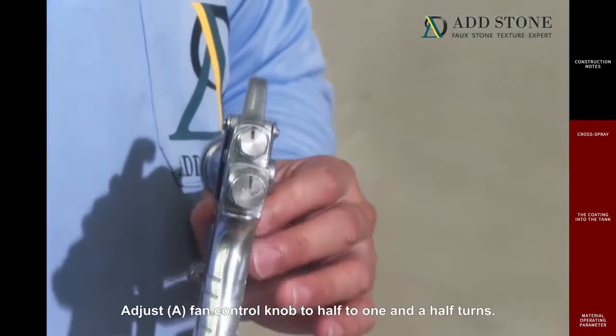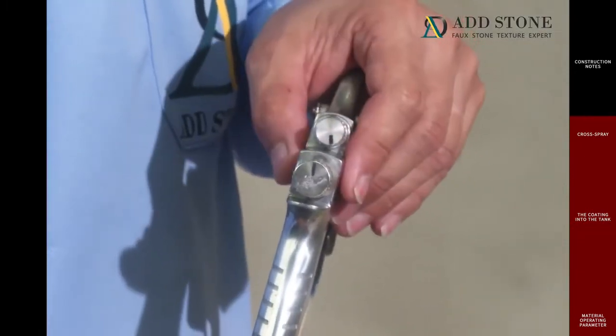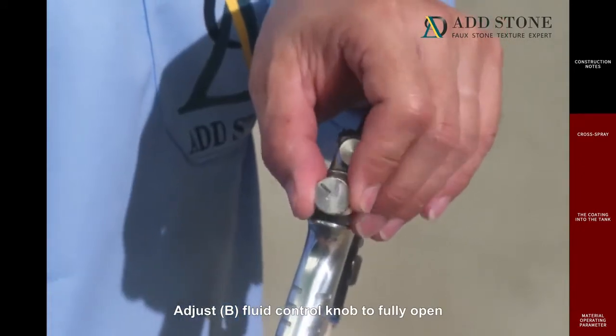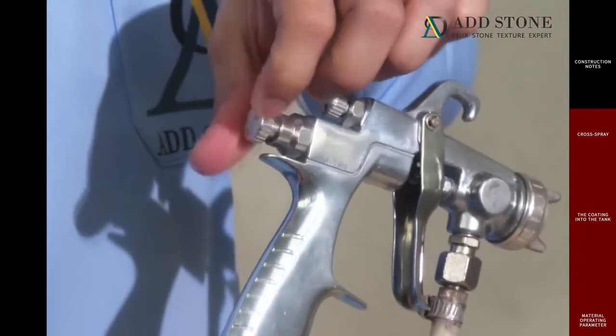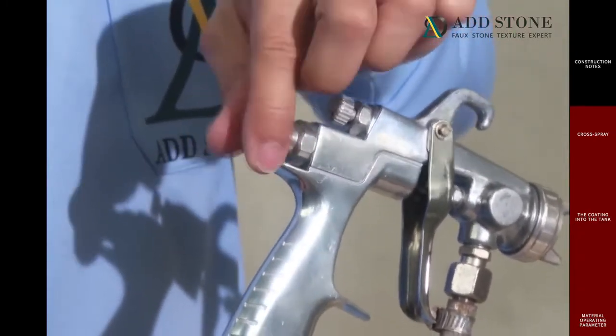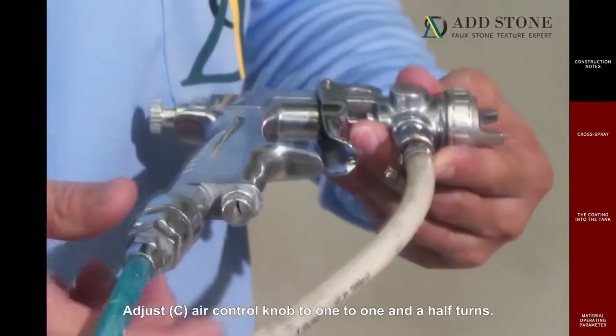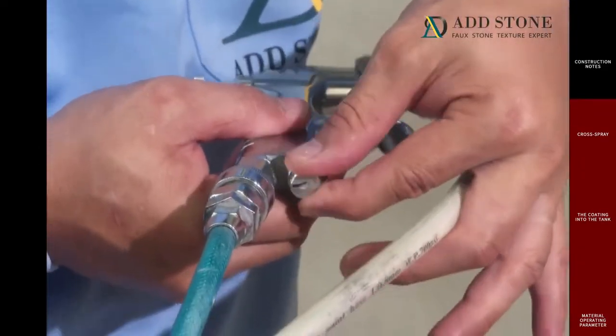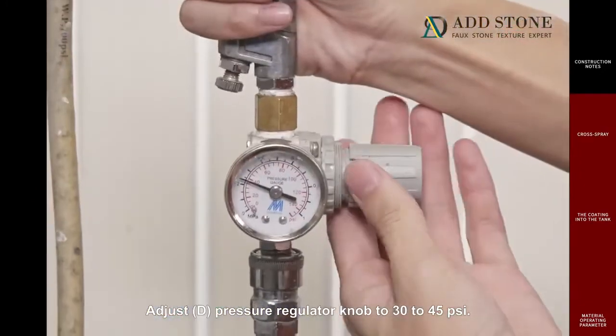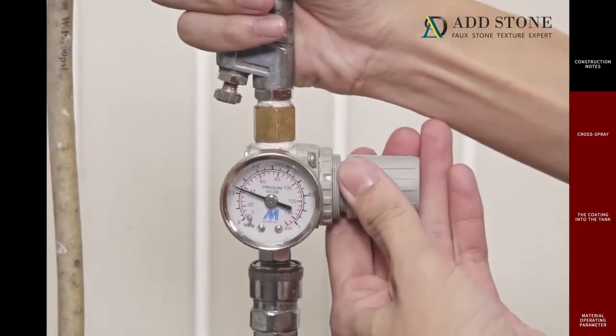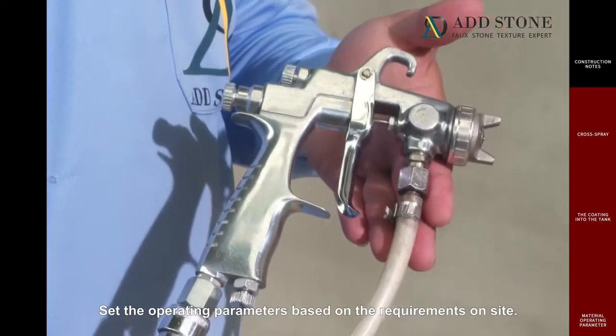Adjust spray gun knob. Adjust A fan control knob to half to one and a half turns. Adjust B fluid control knob to fully open until screw threads are visible. Adjust C air control knob to one to one and a half turns. Adjust D pressure regulator knob to 30 to 45 psi. Set the operating parameters based on the requirements on site.